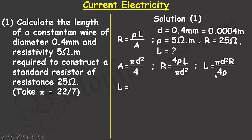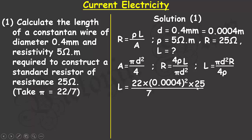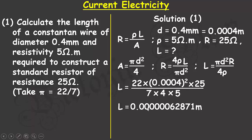Plugging in the values: pi is 22/7, the diameter is 0.0004 squared, the resistance is 25 ohms, and the denominator has 4 multiplied by the resistivity of 5 ohm-meters. Solving with a calculator gives 0.0000062871 meters, which in standard form is 6.28713 × 10⁻⁷ meters.